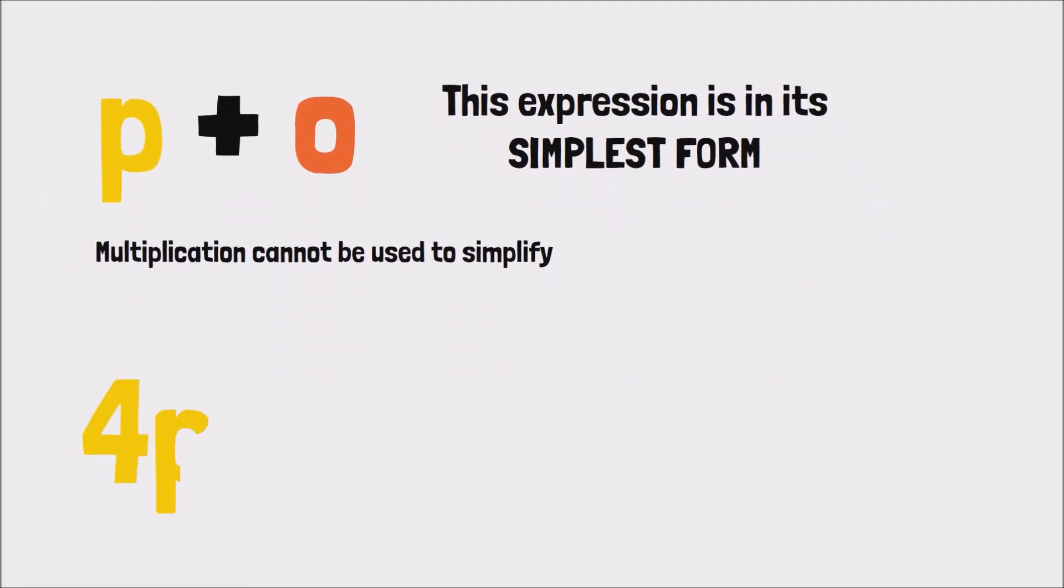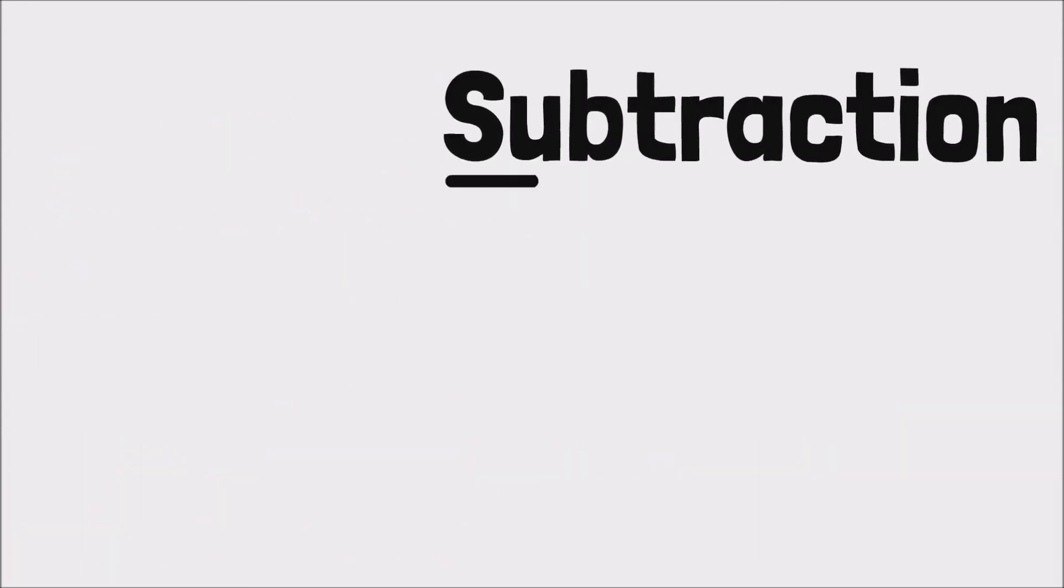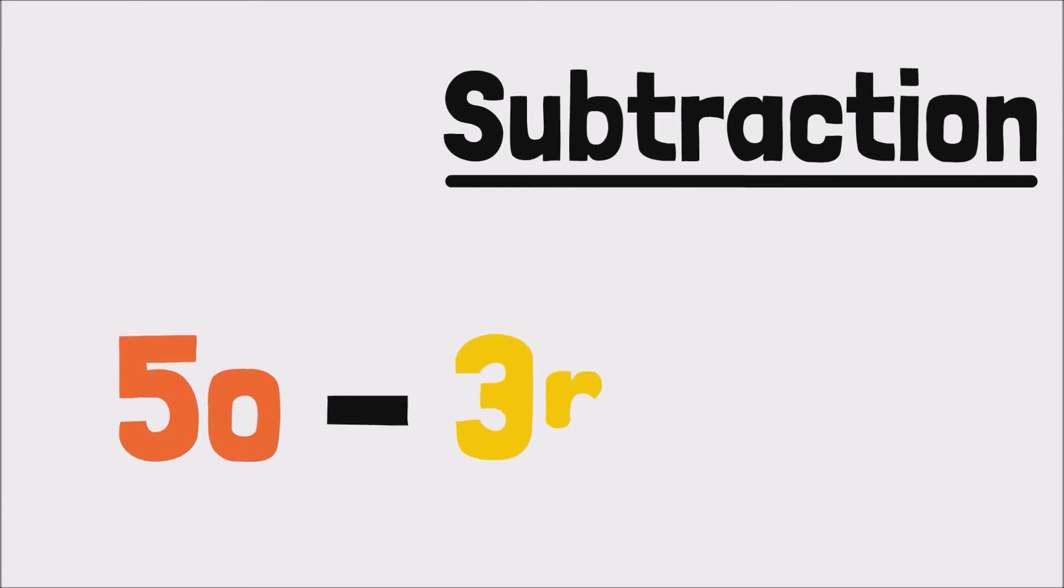How about 4P plus 2O? Again, there is no further way to simplify this because P and O are unlike terms. Now I hope you guys are seeing what I'm saying. Subtracting is the exact same. If we have 5O minus 3P, this cannot be simplified any further because they are unlike terms, and so we just have to leave it as is.